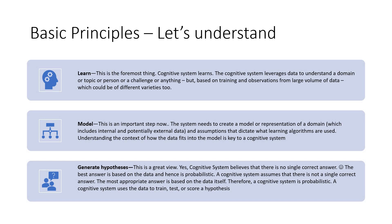The next principle is model — a great and very important step. The system needs to create a model or a representation of a domain, and assumptions are to be presented as well. These dictate what learning algorithms are used. Understanding the context of how the data fits into the model is a key factor. Finally, hypothesis: a cognitive system clearly believes there is no single correct answer. The best answer is based on the data, and since it is data-based, it is highly probabilistic. A cognitive system uses data to train, test, or score a hypothesis. The important sequence is: learn, model, and generate hypothesis.